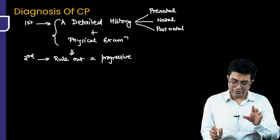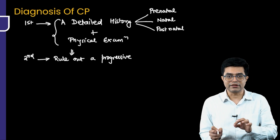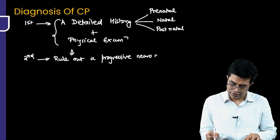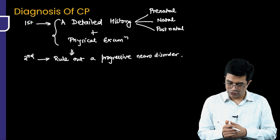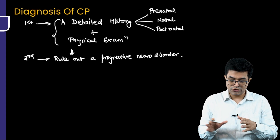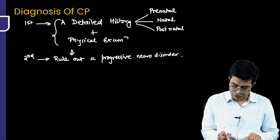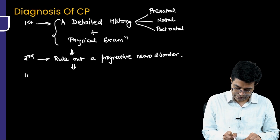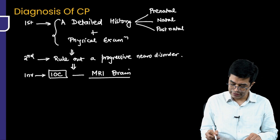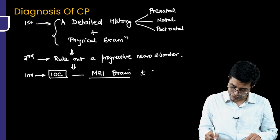Cerebral palsy is a static encephalopathy — a static disorder — so you need to rule out a progressive neurological disorder. Neuroregression disorders, spinal cord tumors, and muscular dystrophies should all be ruled out. It should not be progressive in nature. Then you confirm by investigation. The investigation of choice in these patients is always MRI brain.